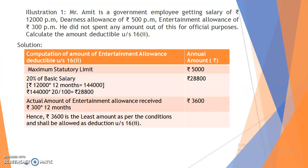Let's look at Illustration 1. Mr. Amit is a government employee getting a salary of Rs. 12,000 per month, DA allowance of Rs. 500 per month, and entertainment allowance of Rs. 300 per month. He did not spend any amount out of this for official purposes. We are asked to calculate the amount deductible under Section 16 subsection 2. We will write the computation of entertainment allowance deductible under Section 16 subsection 2, with the next column as annual amount.